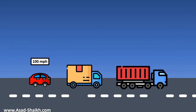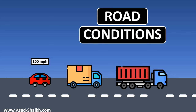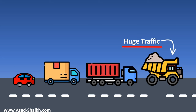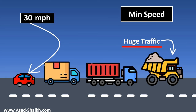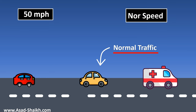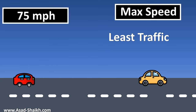Now let's put our car in actual road conditions. Can your car always run at 100 miles per hour? No — road conditions greatly define the speed. For example, heavy traffic from the office might mean a minimum speed of 30 miles per hour. Normal traffic gives a normal speed of around 50 miles per hour. On a holiday with least traffic, the car can run at 75 miles per hour.